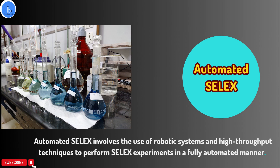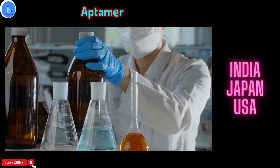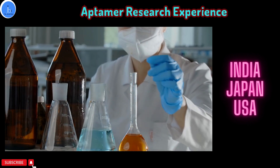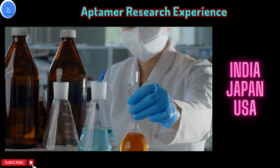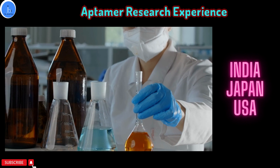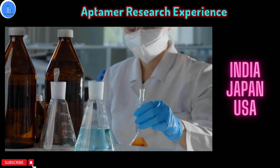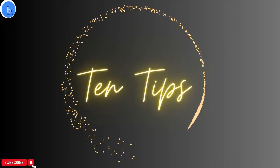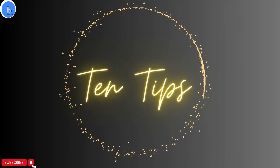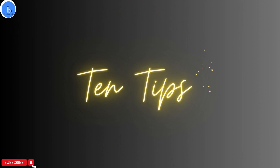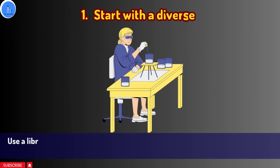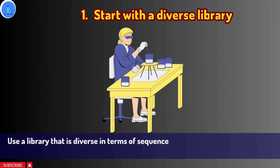I have 15 years of experience in aptamer technology from India, USA, and Japan, and we have completed four aptamer projects, selecting aptamers for macromolecules as well as small ligands. Let me give you 10 tips for a successful SELEX experiment. Tip one: start with a diverse library. The more random your library is in terms of sequence and structure, the higher the chances of getting a good aptamer. A diverse random library is crucial for successful SELEX — use a library that is diverse in terms of sequence, length, and secondary structure.